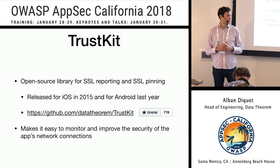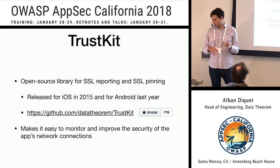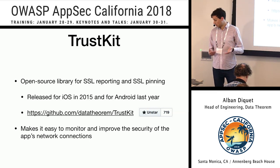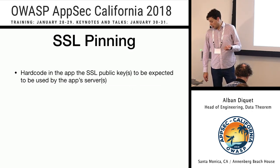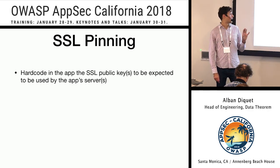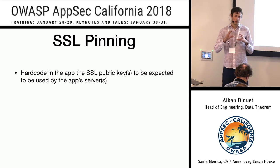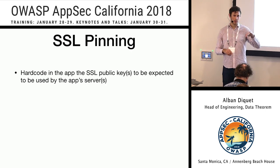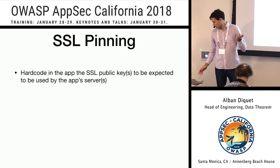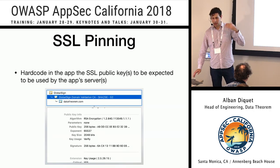TrustKit uses two mechanisms: SSL reporting and SSL pinning. It's an iOS and Android library. The first thing it does is SSL pinning — when your app connects to its server using TLS or HTTPS, it checks the server certificate, makes sure it's trusted, and makes sure it was issued for the hostname you're trying to connect to. That's default OS validation. SSL pinning adds an extra step to that validation.